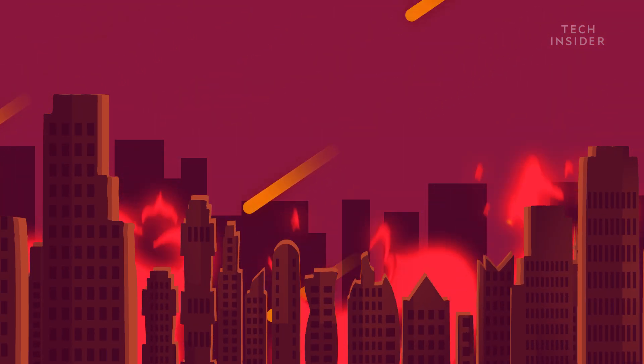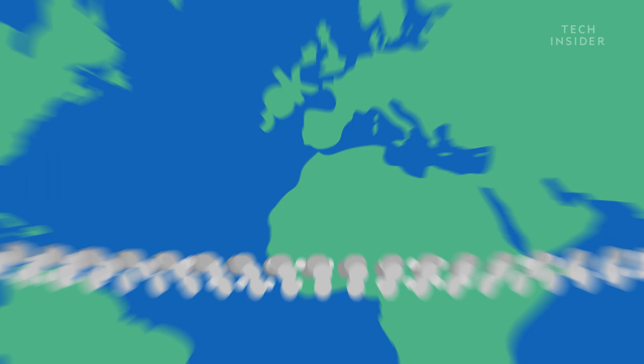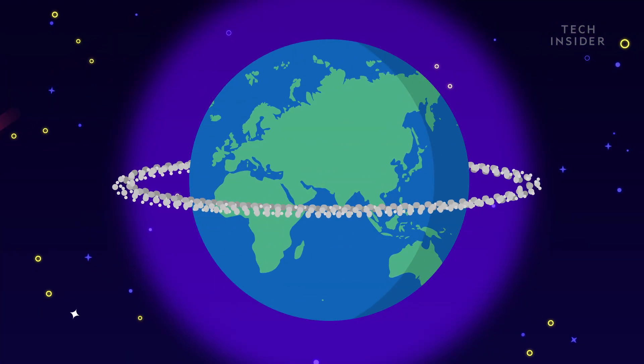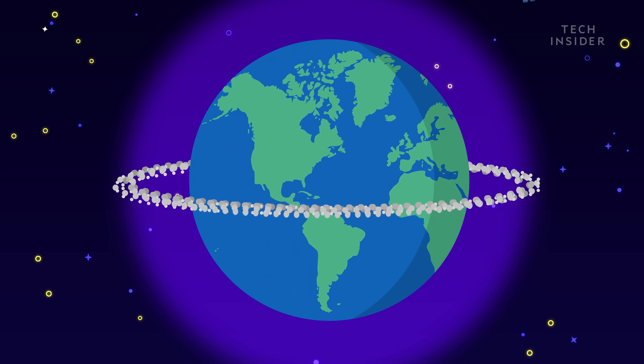And what didn't hit the planet would instead be trapped by Earth's gravity, forming a ring of debris around the equator, similar to the rings around Saturn, but not for long.